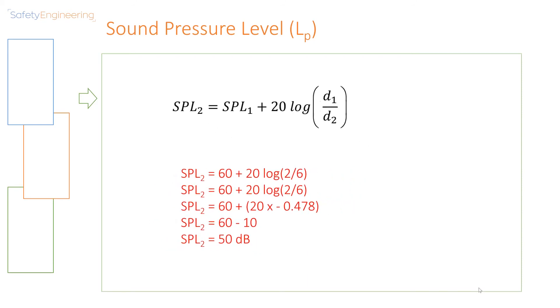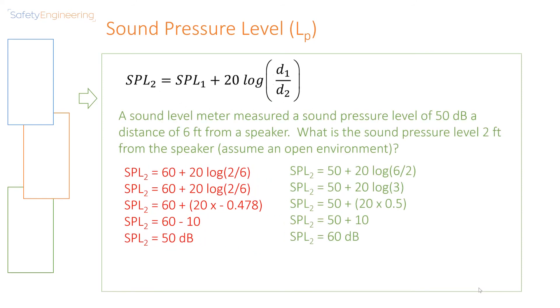Let us now try the opposite. If a sound level meter measured a sound pressure level of 50 decibels at a distance of 6 feet from a speaker, what is the sound pressure level 2 feet from the speaker? Now, we already know the answer would be 60 decibels. This is the exact opposite of the previous example that we were working on. So all we would have done in this case is we have substituted the relevant values into our equation and we are going to get 60 decibels.